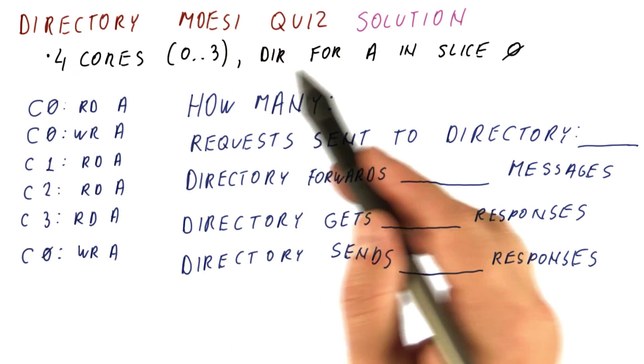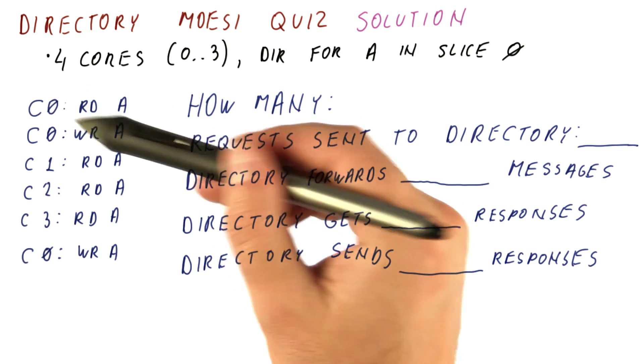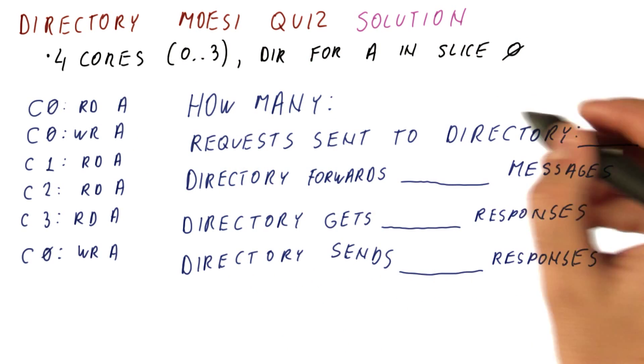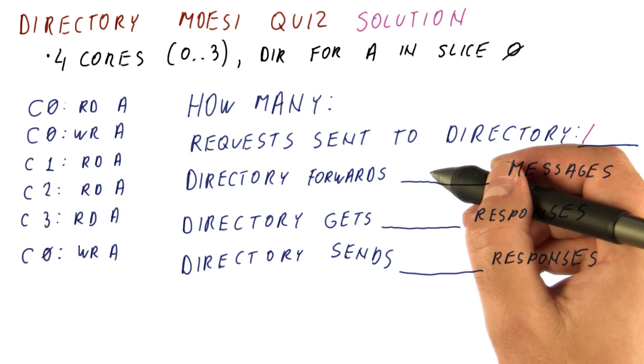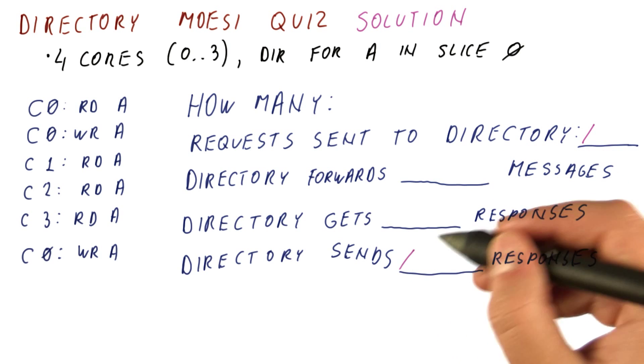Let's look at the solution for what happens in our directory MOESI quiz. When core 0 issues a read, it sends a request to the directory. The directory doesn't forward or get any responses, it just sends a response.